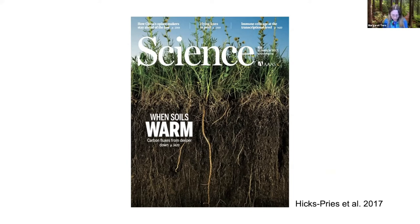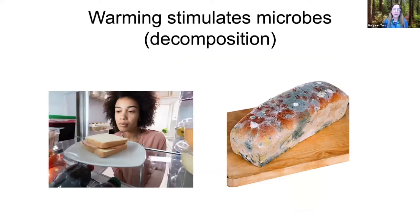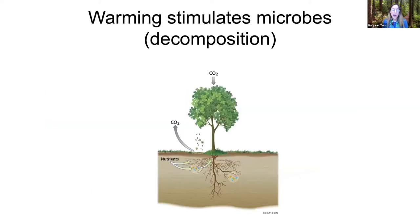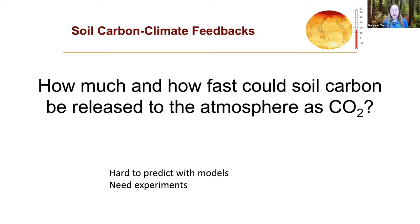You all have an intuitive sense of what happens because you have a refrigerator and freezer. You know that if you put your food in a colder environment, mold — fungal or bacterial growth — is much slower. So we kind of know that warming stimulates decomposition. When warming stimulates decomposition, you get more CO2 leaving the soil than plants are taking up. That leads to more CO2 in the atmosphere, and if it's caused by climate warming, there will be a feedback reinforcing that warming. One of the main questions driving my research is: how much and how fast could soil carbon be released to the atmosphere as CO2?